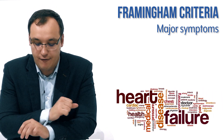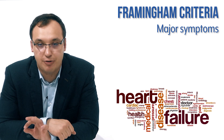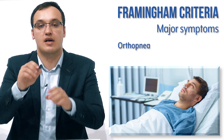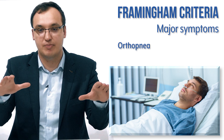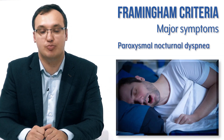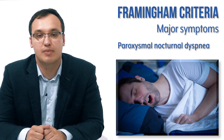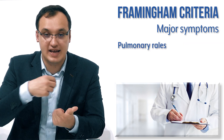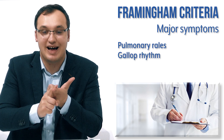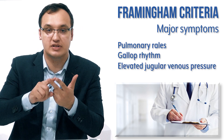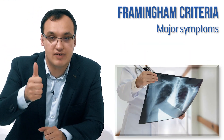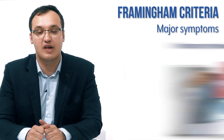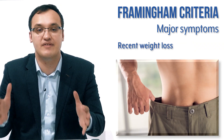Let's recap the eight major Framingham criteria. Two from anamnesis: orthopnea and paroxysmal nocturnal dyspnea. Three from physical examination: pulmonary rales, third heart sound (gallop rhythm), and elevated jugular venous pressure. Two from chest X-ray: cardiomegaly and pulmonary edema. And the eighth criterion: weight loss of more than 4.5 kilograms in five days.